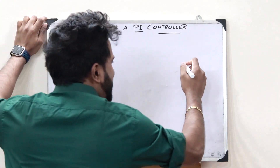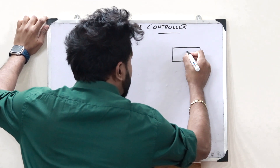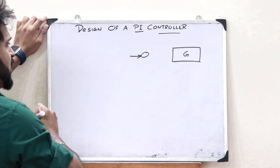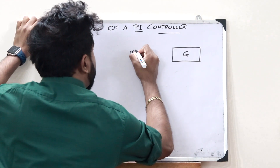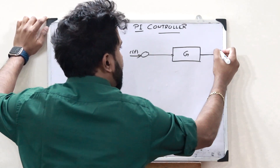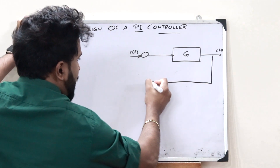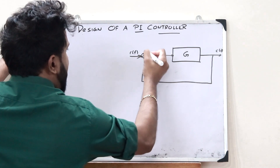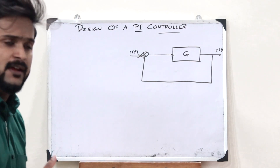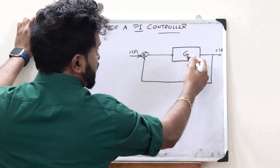Let us consider a basic control system which has got a forward loop gain of say G. Let us provide a particular input, say R of T, and we get an output C of T. Let us now provide a unit negative feedback. So this is a basic unit negative feedback control system, with a forward gain transfer function of G.